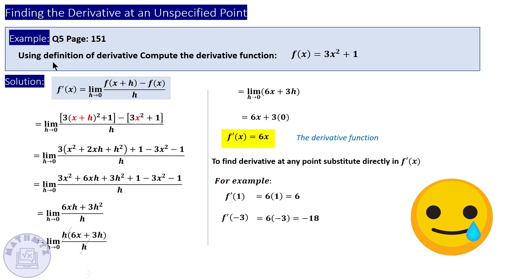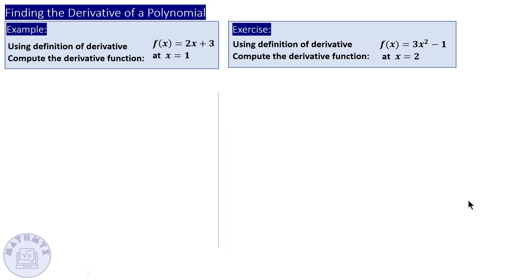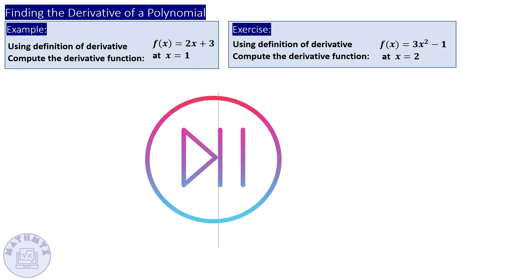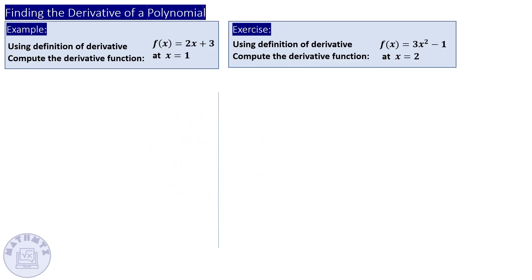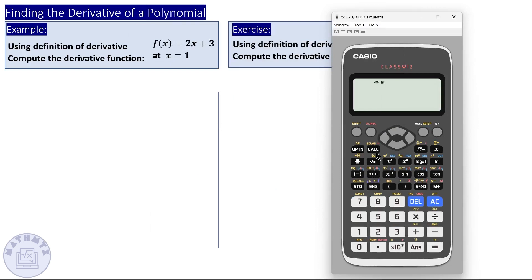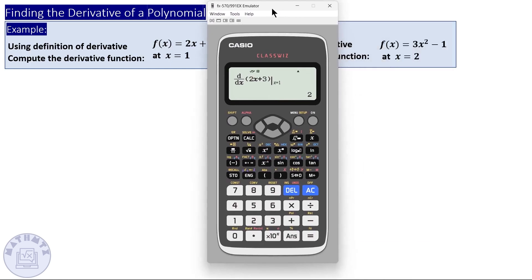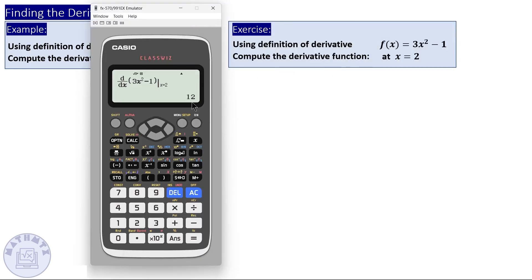Here are a couple of examples. I encourage you to pause the video, try to do them on your own using the definition of the derivative or the alternative formula, and then come back to check your answer. The derivative of 2x plus 3 at x equals one is two, and the answer for the second question is 12.